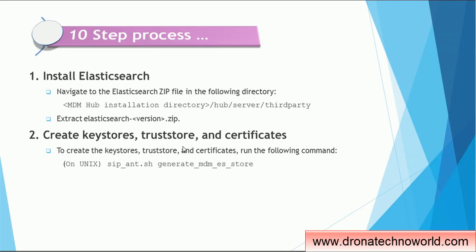Let's start with step one: installing Elasticsearch. When we buy the Informatica MDM product — specifically version 10.3, because Elasticsearch comes with 10.3 — you will get an installable under the hub server third-party directory. The name of the software will be 'Elasticsearch-' followed by the version number as a zip file. We have to extract that zip file and it will be ready for use.